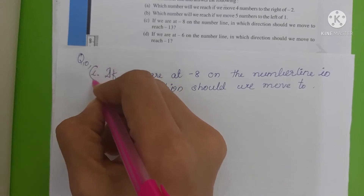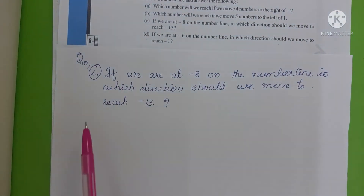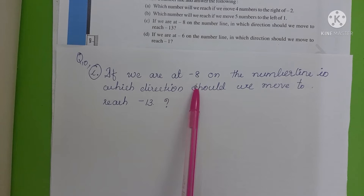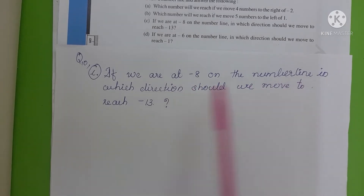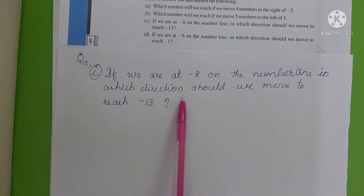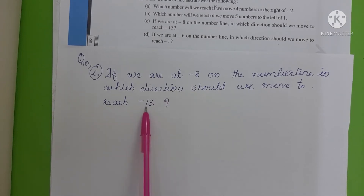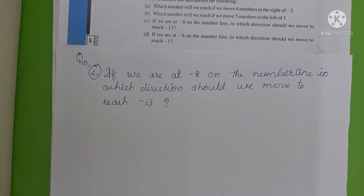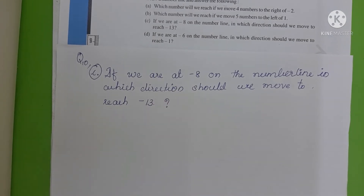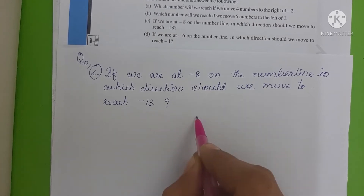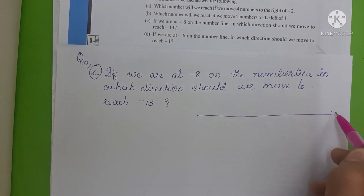Coming to part C. The question is: if we are at minus 8 on the number line, in which direction should we move to reach minus 30? So first of all, we can draw a number line.